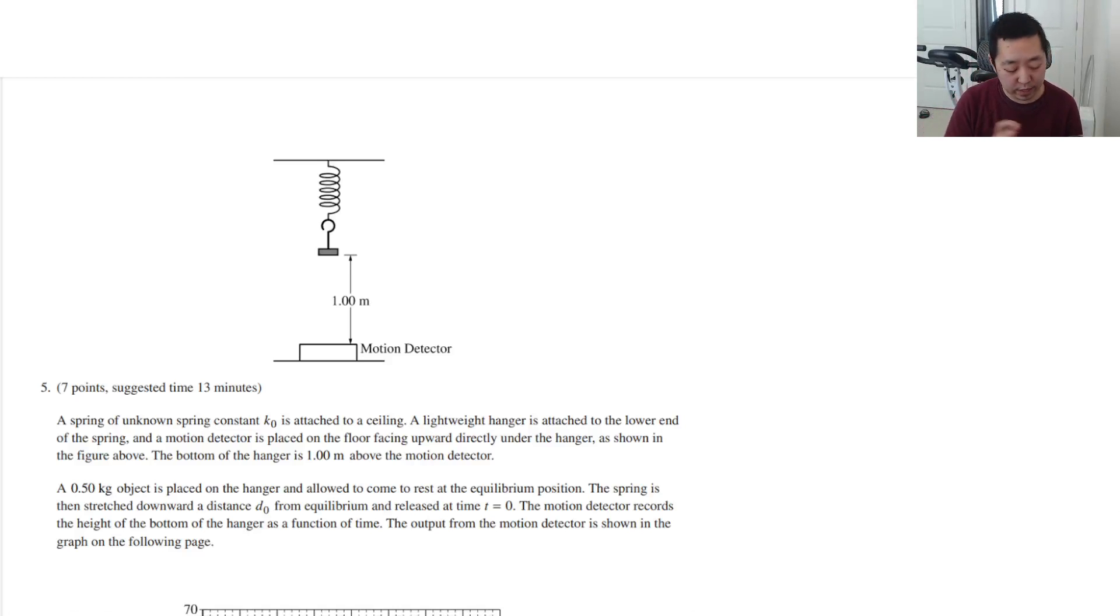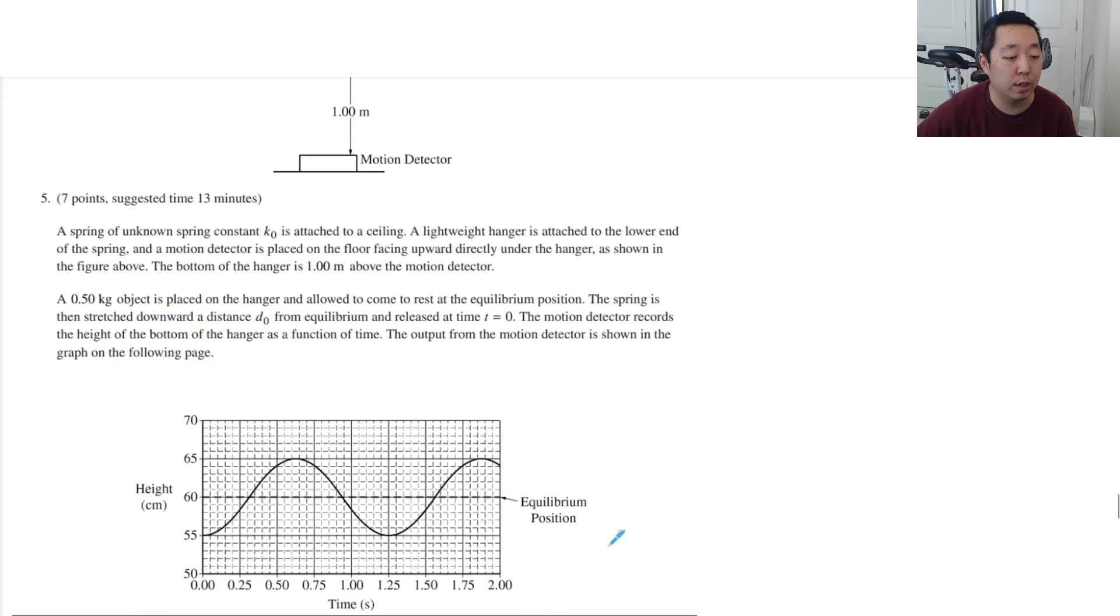Alright, we are on number five. Last question, and as usual, if I have any mistakes, I'll put it in a pinned comment below. A spring of unknown spring constant K0 is attached to the ceiling. A lightweight hanger is attached to the lower end of the spring, and a motion detector is placed on the floor facing upward directly under the hanger, as shown in the figure above. The bottom of the hanger is one meter above the motion detector. A 0.5 kilogram object is placed on the hanger and allowed to come to rest in equilibrium position. The spring is then stretched downward d0 from equilibrium and released at time t equals 0. The motion detector records the height of the bottom of the hanger as a function of time. The output of the motion detector is shown on the graph in the following page.